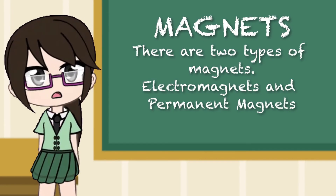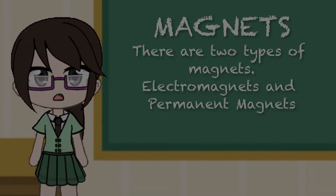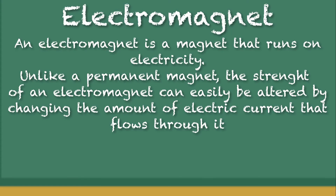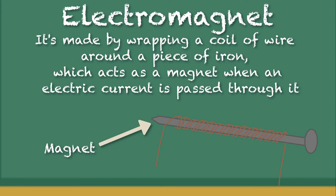There are two types of magnets: electromagnet and permanent magnet. An electromagnet is a magnet that runs on electricity. Unlike a permanent magnet, the strength of an electromagnet can easily be altered by changing the amount of electric current that flows through it. It's made by wrapping a coil of wire around a piece of iron, which acts as a magnet when an electric current is passed through it.